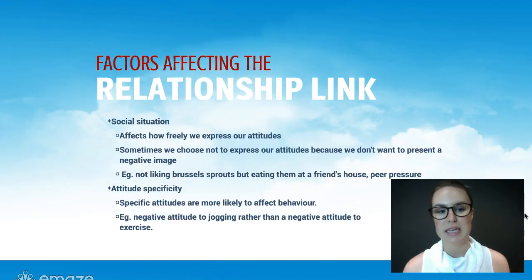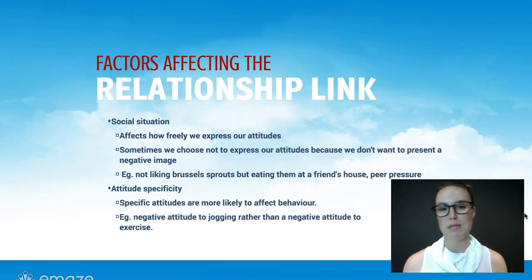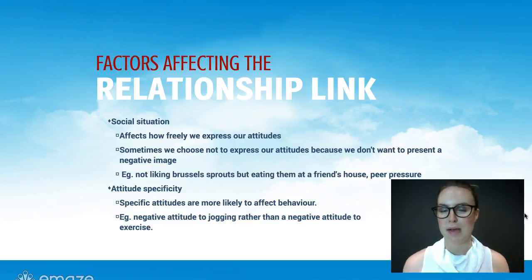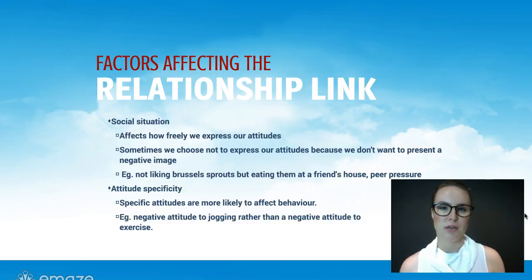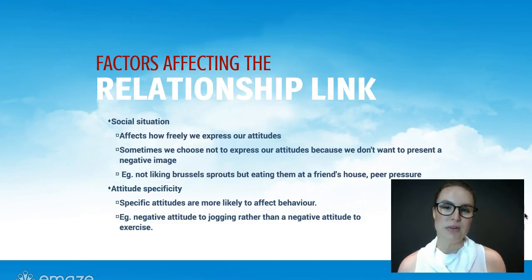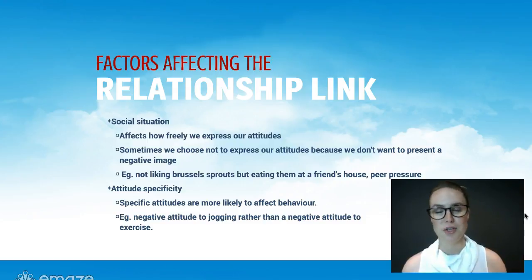Now some more factors that affect this link. The social situation affects how freely we might express our attitudes. Sometimes we might not express our attitudes because we're worried about the image that people might perceive about us. For example, say you don't like Brussels sprouts, but when you go to your friend's house trying to make a good impression on the parents and they serve you Brussels sprouts — more often than not you're going to eat them, just because it's polite, the right thing to do, and you don't want to make a fuss. Another example of this is peer pressure.